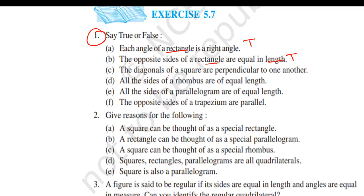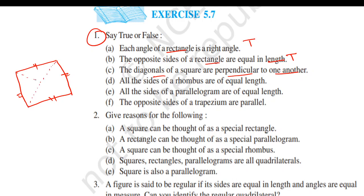Part C: the diagonals of a square are perpendicular to one another. According to the properties of a square, all the sides are equal. The diagonals have equal length and they perpendicularly bisect each other — there will be a 90 degree angle here. So this is TRUE.